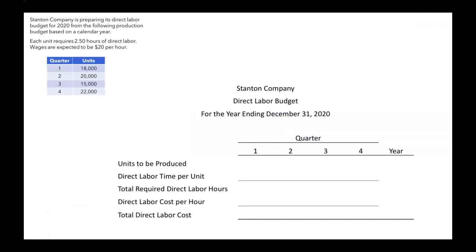This is what a direct labor budget will look like. We have our units to be produced, direct labor time per unit, total required direct labor hours, direct labor cost per hour, and total direct labor cost.